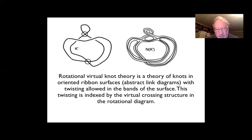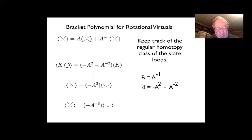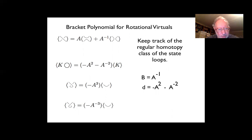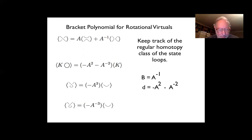Working diagrammatically, one has the bracket polynomial model for the Jones polynomial and its generalizations for rotational virtuals. You do it the same way as the ordinary bracket: take the skein expansion using A and A-inverse, which ensures invariance under Reidemeister 2 and 3. An extra loop multiplies by minus A-squared minus A-to-the-minus-2. Classical curls multiply by minus A-cubed or minus A-to-the-minus-3. I often call B equal to A-inverse, and D equal to minus A-squared minus A-to-the-minus-2.